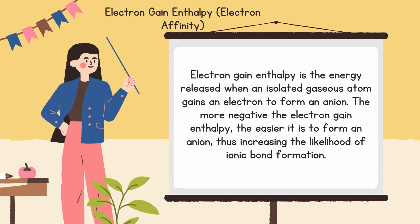Next is electron gain enthalpy, electron affinity. Electron gain enthalpy is the energy released when an isolated gaseous atom gains an electron to form an anion. The more negative the electron gain enthalpy, the easier it is to form an anion, thus increasing the likelihood of ionic bond formation.